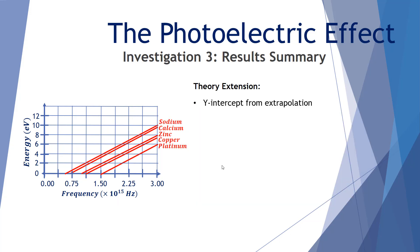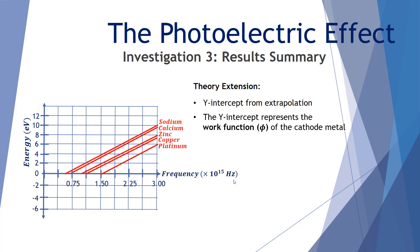Let's extend our knowledge a little bit further. The y-intercept. If we were to extrapolate, continue that trend and extend our energy into a negative axis. The y-intercept represents the work function of the cathode metal. So sodium, if we were to continue our sodium line with a dotted line, we find that sodium has a work function around about two electron volts. Calcium also has a work function a little higher. Zinc's work function, copper's work function, and platinum's work function. Now recall, the work function is the amount of energy required to remove the least bound electron from the surface of the metal.